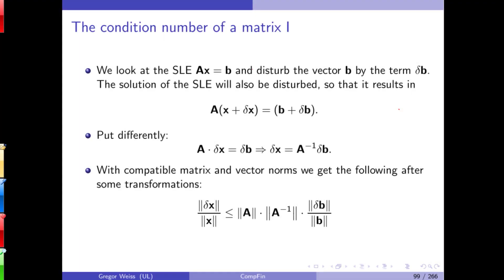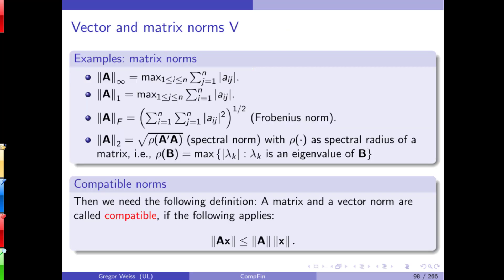Welcome everyone to today's lecture. I will talk a little bit about the condition number of the matrix again, because we haven't seen it for three weeks. We are looking at norms of vectors and matrices, meaning that we want to measure in any given mathematical space the distance of a mathematical object to a natural zero — whether that's a zero function, a zero real number, the zero vector, or the zero matrix.